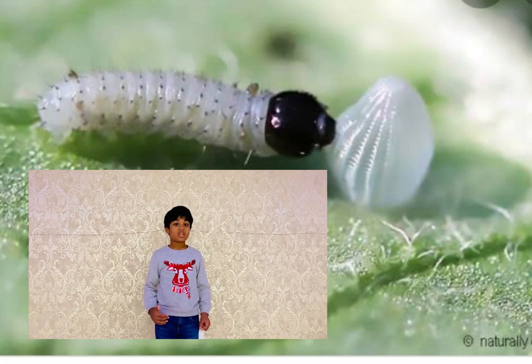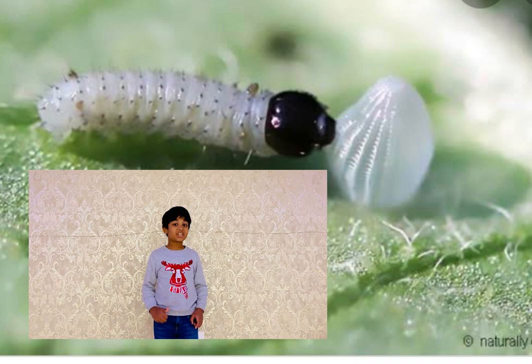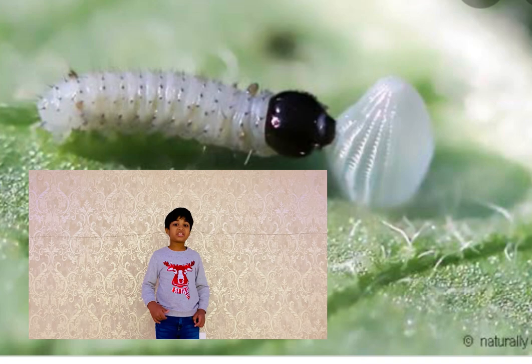After a few days, the egg hatches and a larva comes out. The larva is also known as a caterpillar. First, the larva eats its own eggshell. After it's done eating its own eggshell, it starts eating leaves.